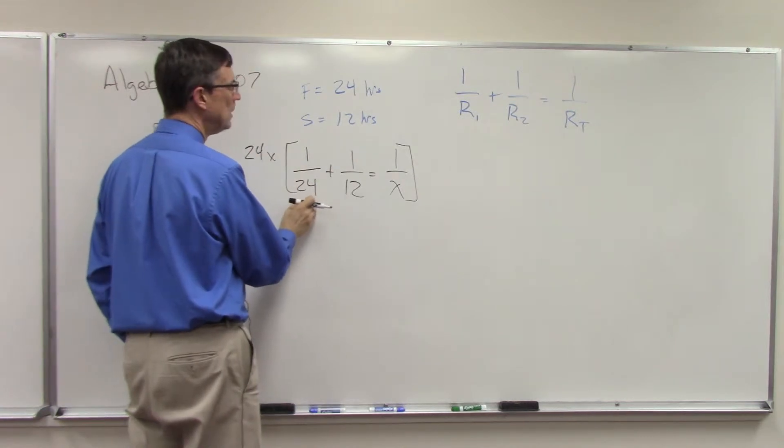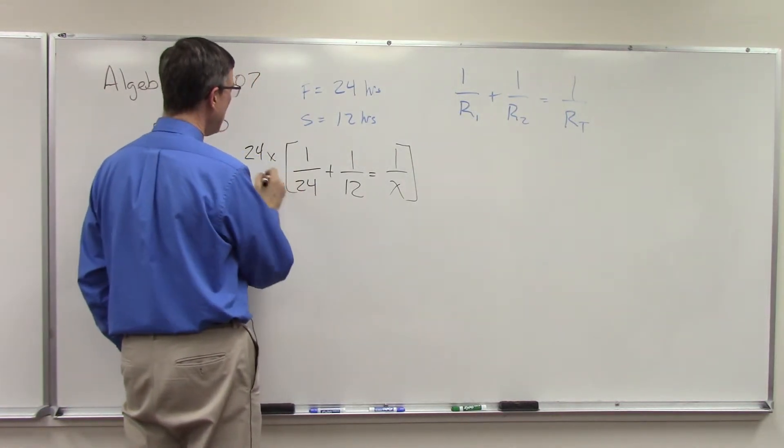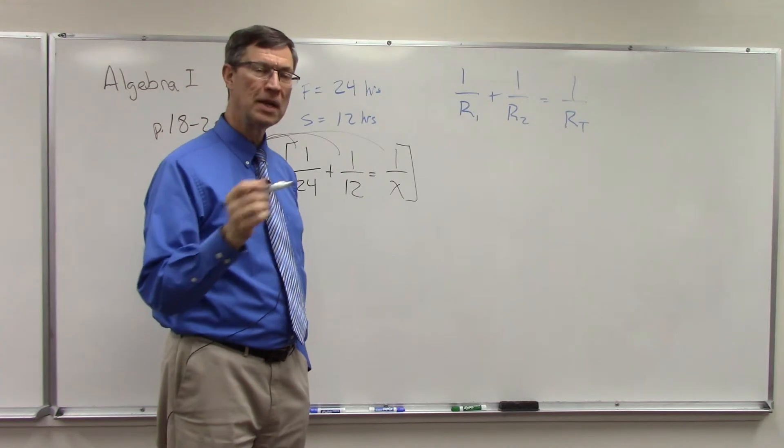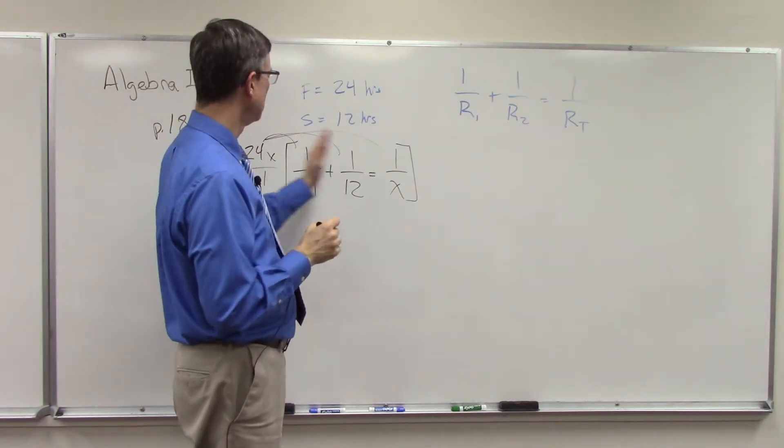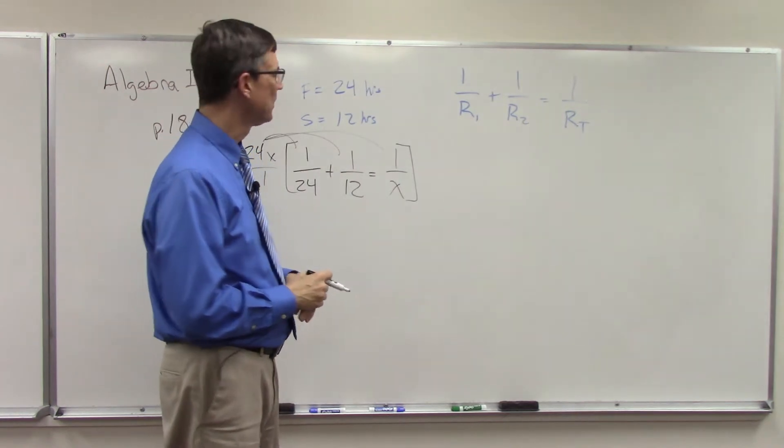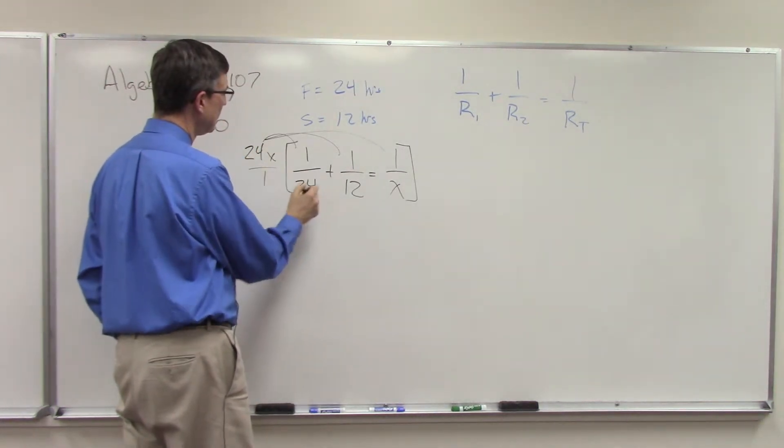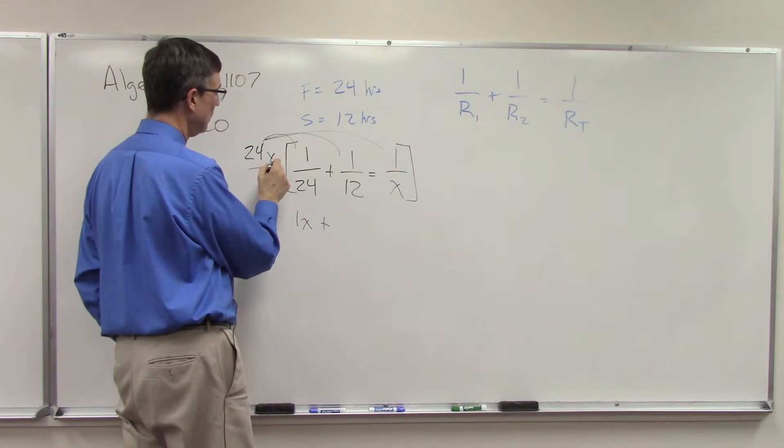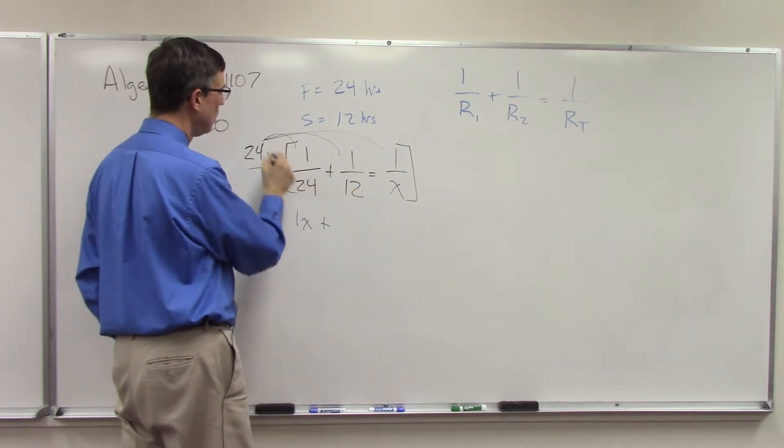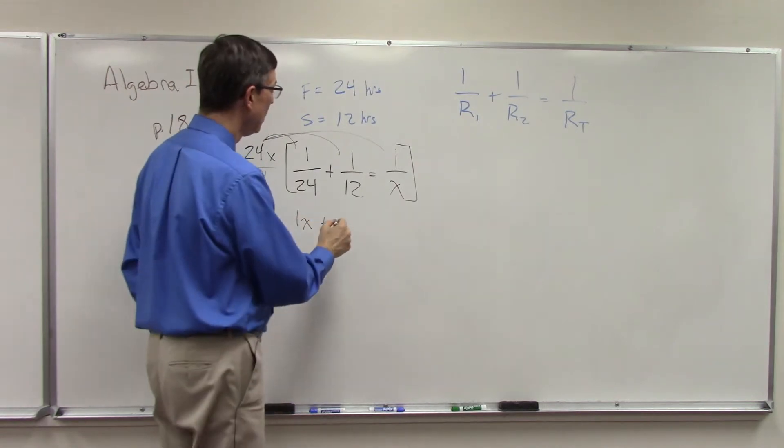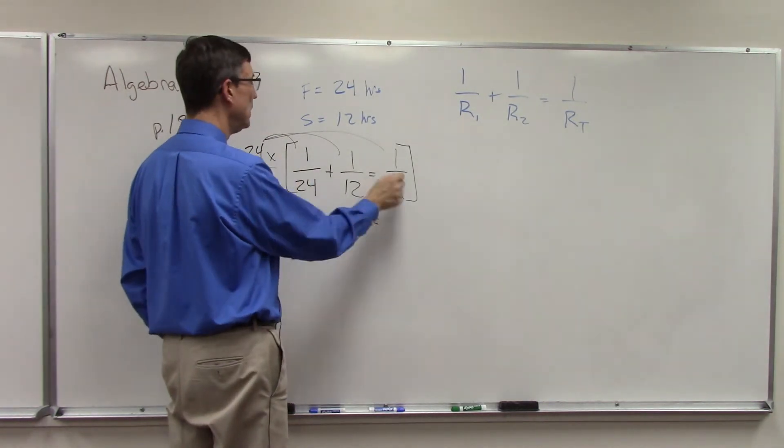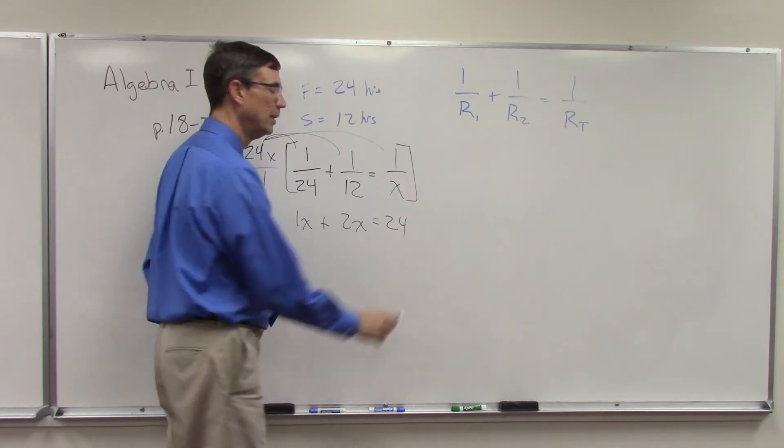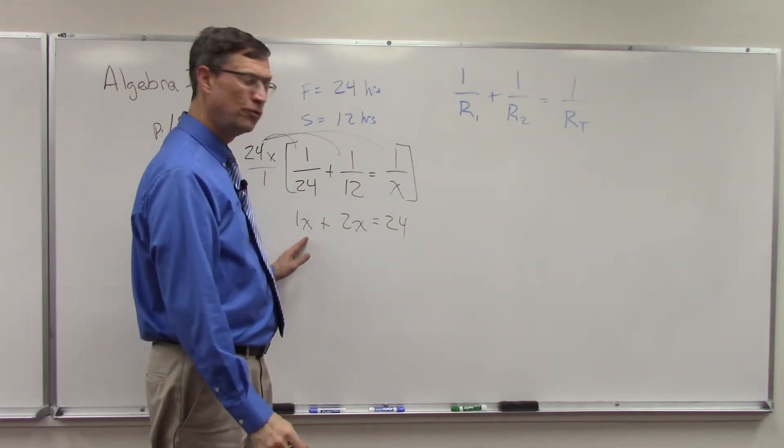And I'm just going to multiply that, kind of distribute it out times everything. And in the pace in the example they show they just multiply this times the first one, this times the second, this times the third, that has the same effect. When I multiply this times this, notice that the 24 cancels the 24 and so I just get 1x here. 24x times 1 over 12, the 12 will cancel against the 24 and I'll have 2x. And then over here the x is going to completely cancel out and so I'll just get 24.